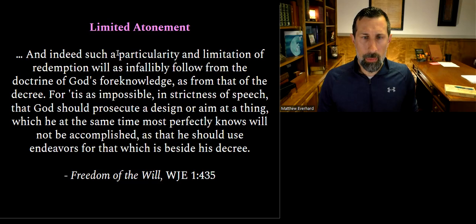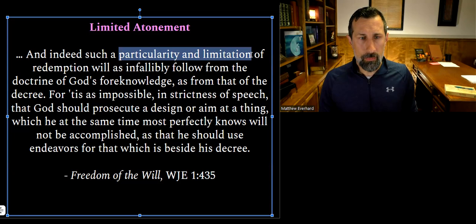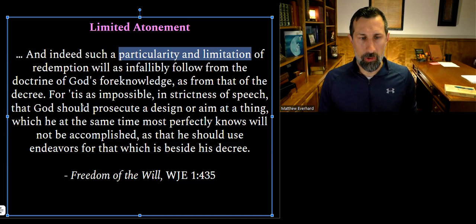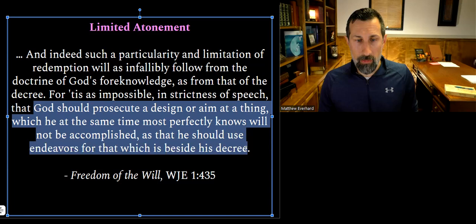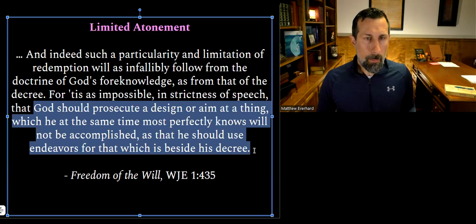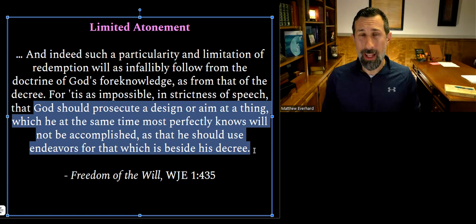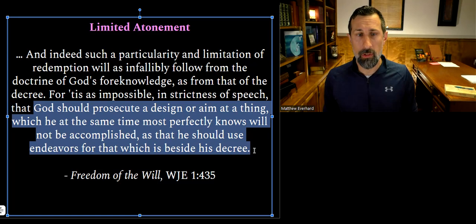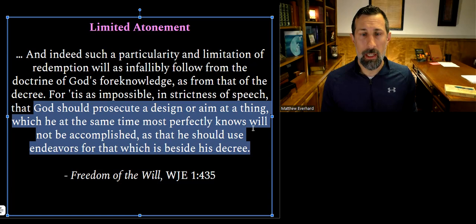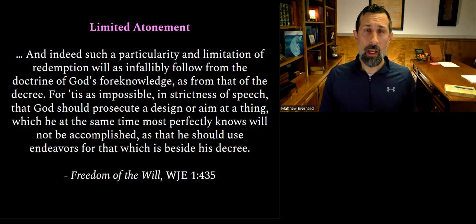To further clarify limited atonement, Edwards adds: 'Such a particularity and limitation of redemption will as infallibly follow from the doctrine of God's foreknowledge as from that of his decree. For it is impossible in strictness of speech that God should prosecute a design or aim at a thing which at the same time he most perfectly knows will not be accomplished.' Previously in Freedom of the Will, Edwards argued that God's foreknowledge necessarily entails his predestination — and here he applies that to the limited and particular redemption of the elect.